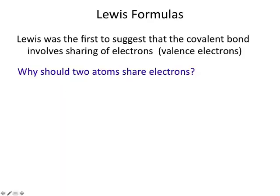Lewis was the first to suggest that the covalent bond involves sharing of electrons. These are the valence electrons at work, because they're the ones closest to the exterior of the atom and so they can interact with other atoms nearby. The core electrons don't interact with the other electrons nearby.